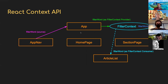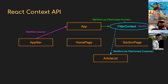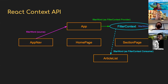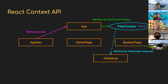This isn't the worst thing because it's only one level, but imagine 12 levels of components where only the bottom one needs the filterWord and everything in between is just passing it down. That's a great use case for context. Instead of passing props down all those levels, App populates a filter context with filterWord, and ArticleList can reach directly into that context. Homepage and SectionPage are agnostic to filterWord — they don't care about it at all.